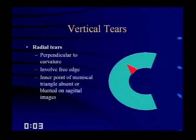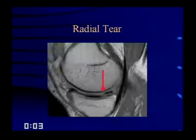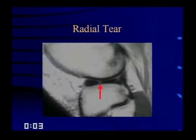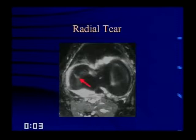Radial tears are perpendicular to the curvature and involve the free edge of the meniscus. The inner point of the meniscal triangle will be absent or blunted on sagittal images. These often propagate further peripherally, and you'll see a column of abnormal signal that may extend into the body. You can sometimes see the tear on axial images, and if your imaging plane parallels the tear, you get a ghosting phenomenon where the meniscus suddenly appears gray. Look at all your planes — axial, coronal, and sagittal — for these tears.